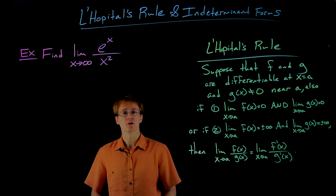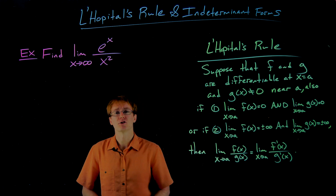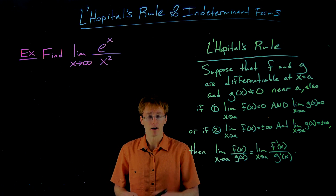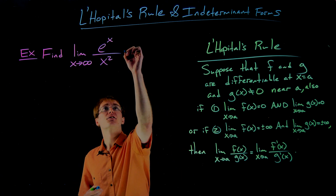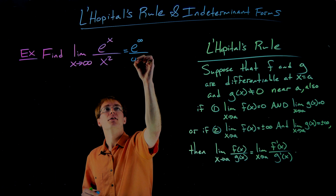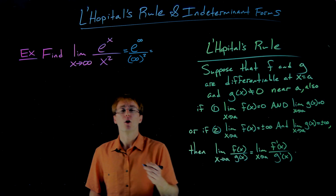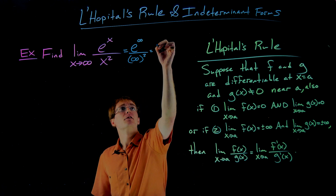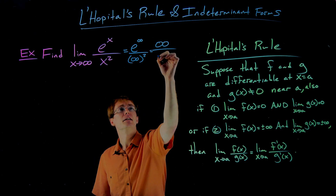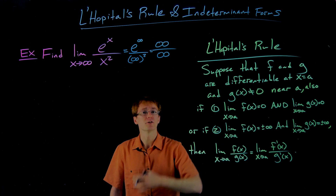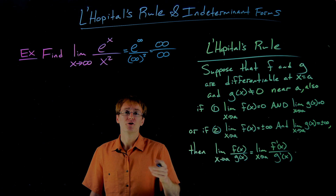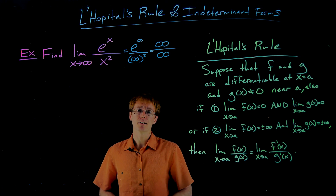Remember, the first thing we should always do when trying to evaluate these limits is just evaluate them directly using direct substitution. So if we try to plug in infinity, taking the limit of the numerator and denominator independently, we end up with e to the power of infinity over infinity squared. E to the power of infinity approaches infinity, and infinity squared also approaches infinity. So we've encountered one of our indeterminate quotients — infinity over infinity — which means it is appropriate to use L'Hôpital's rule here.